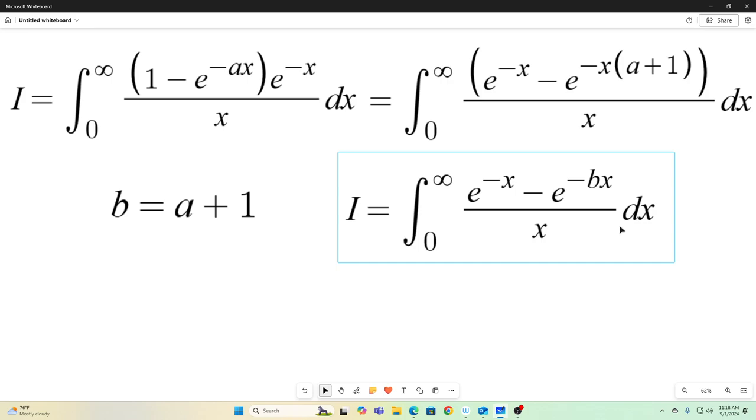So anytime we see b, we know that that is a plus one. So this is our integral. Our integral is the integral from zero to infinity of e to the negative x minus e to the negative bx over x dx. And I've solved integrals like that.